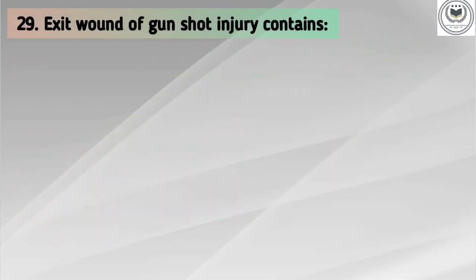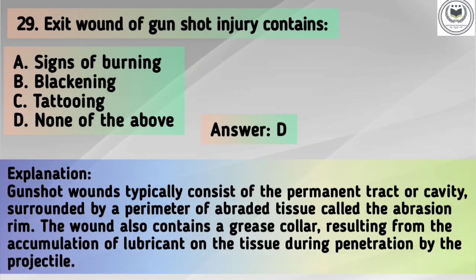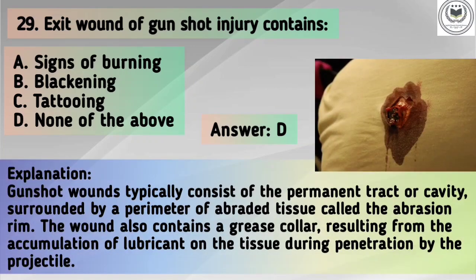Question number 29. Exit wound of gunshot injury contains — Options: A. Signs of burning, B. Blackening, C. Tattooing, D. None of the above. The correct answer is option D: None of the above. Explanation: Gunshot wounds typically consist of the permanent tract cavity surrounded by the perimeter of abraded tissue called the abrasion ring. The wound also contains a grease collar resulting from the accumulation of lubricant on the tissue during penetration by the projectile.